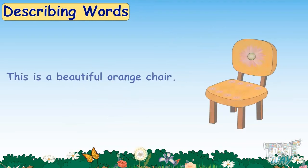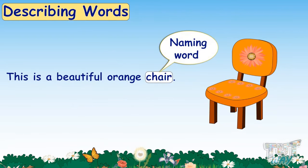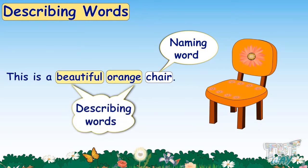Here, we have a beautiful orange chair. The object we are talking about is chair. Chair is the naming word, as it is the name of an object. And the words that are describing the chair are beautiful and orange. So, beautiful and orange are the describing words.